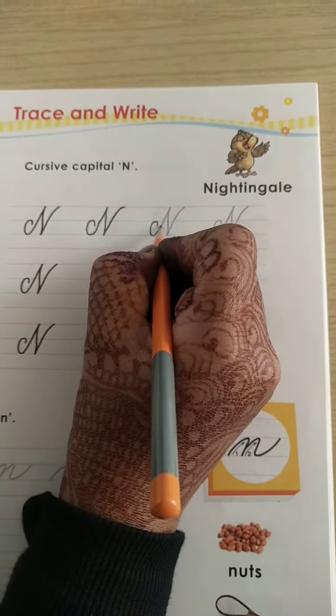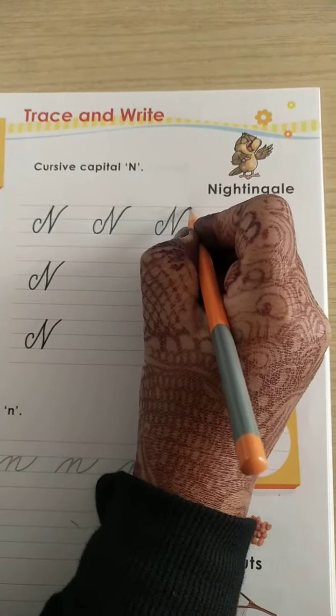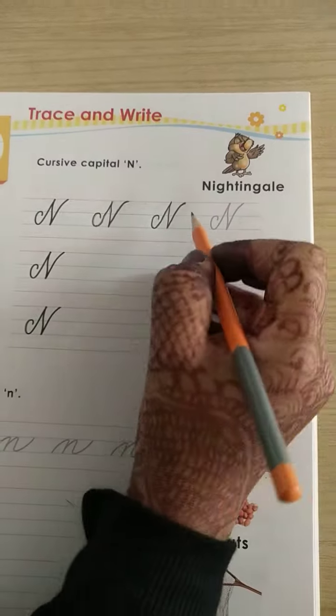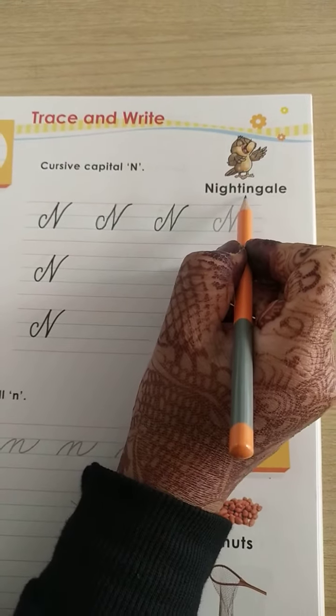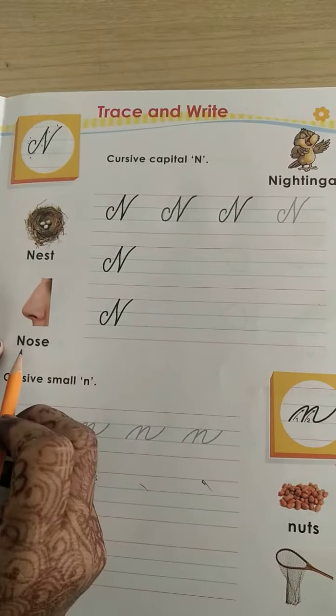Curve, go up, come down, again go up. And for nightingale, and for nest, and for nose.